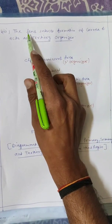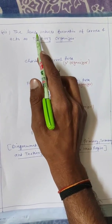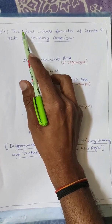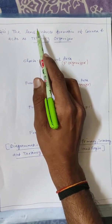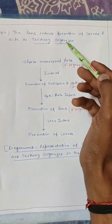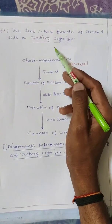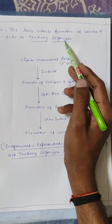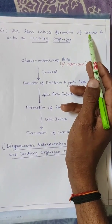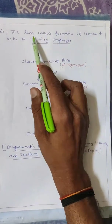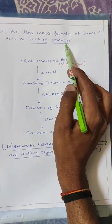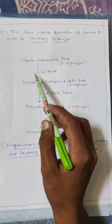Third, the lens induces formation of the cornea, and acts as a tertiary organizer. The lens, which was formed from the optic cup, now further induces the next organ or tissue, which is the formation of the cornea. Then the lens acts as a tertiary organizer.